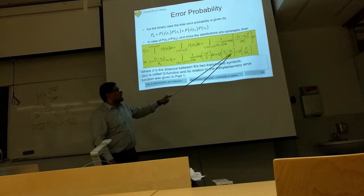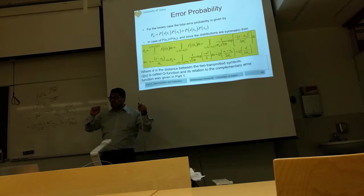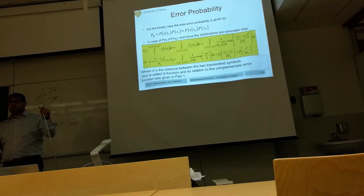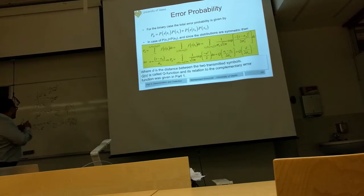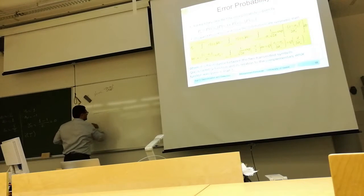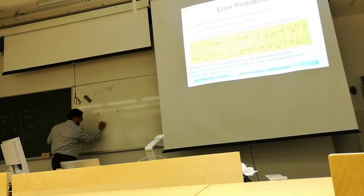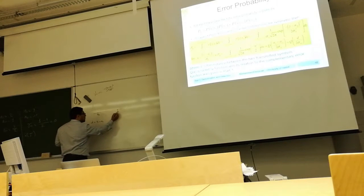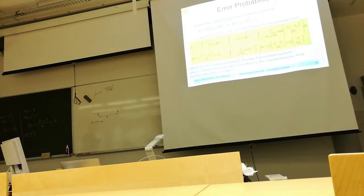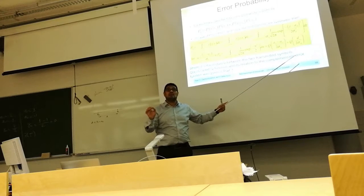The term A1 − A0 is the distance between the two transmitted signal levels. In the binary system, the vectors lie on the x-axis, and A1 − A0 is the distance between them. The probability of error depends on this distance divided by the noise standard deviation. You can easily calculate the probability of error in a binary system using this Q-function.